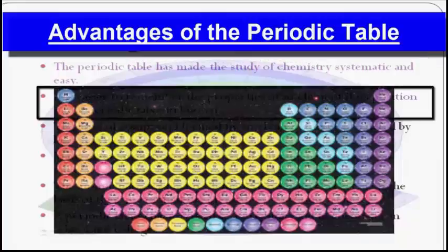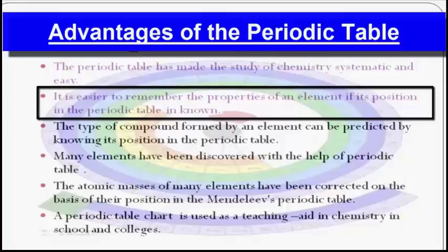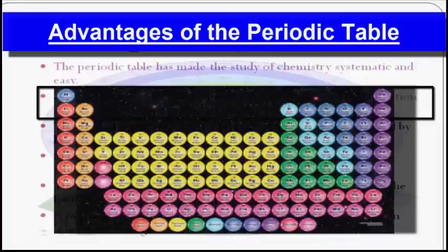The second advantage is that it is easier to remember the properties of elements if their position in the periodic table is known. For example, the element radium occurs in group 2. Since the common elements of group 2 are magnesium and calcium, the chemical properties of radium will be similar to those of magnesium and calcium. This is how knowing the position of an element in the periodic table makes it easier to remember and predict its properties.